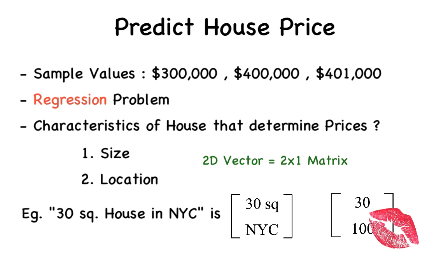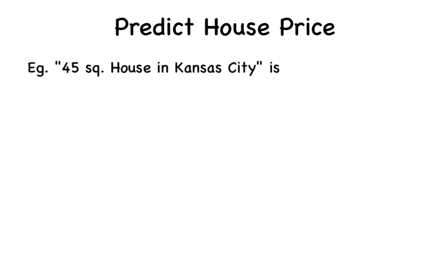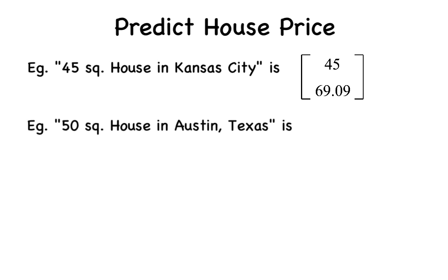We'll give two other examples. A 45 square house in Kansas City would be represented by the feature vector 45 and 69.09. And a 50 square house in Austin, Texas would be represented as 50 and 74.04.